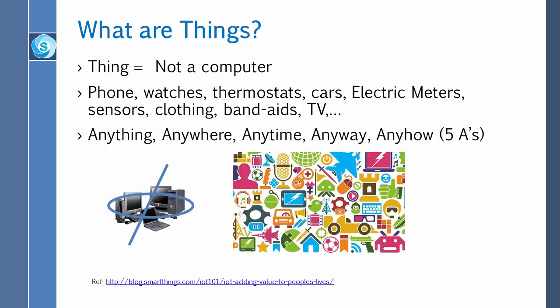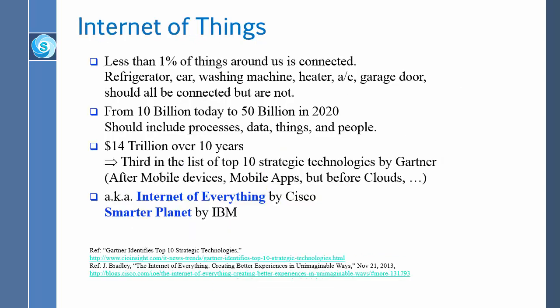That includes phones, watches, thermostats, cars, electric meters, sensors, fueling, bandages, and TVs — anything, anywhere, anytime, anyhow. Everything will be connected. If you count how many things are connected today, only less than 1% are connected, and that number can keep going down as you count more and more things. There is this market opportunity to connect 99% of the things in the world, growing from 10 billion today to 50 billion in 2020, representing $14 trillion over 10 years.